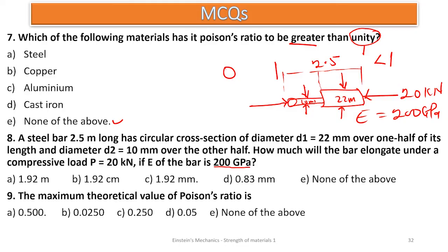The force is constant, L for each part is half the total length, and the area corresponds to the diameter of each part. When you plug in all the values you get a total elongation of 1.92 mm. Please check your units — if you are working in meters make sure everything is uniform, and if working in millimeters make sure that is also uniform.